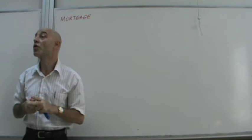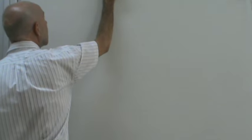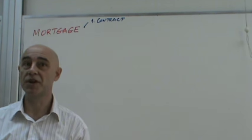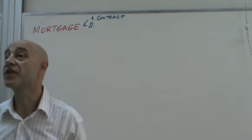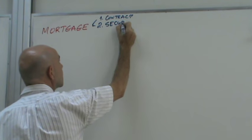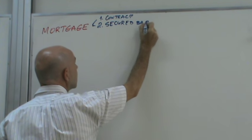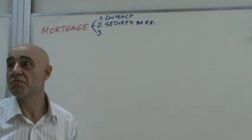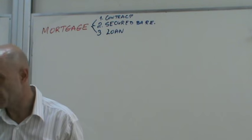A mortgage has three meanings: first, a contract between parties; second, secured or collateralized by real estate; and third, a loan.